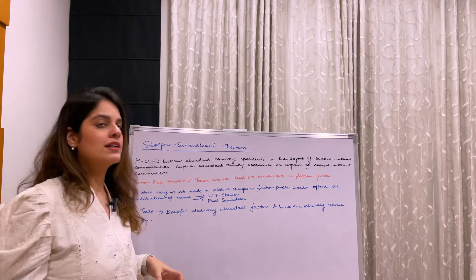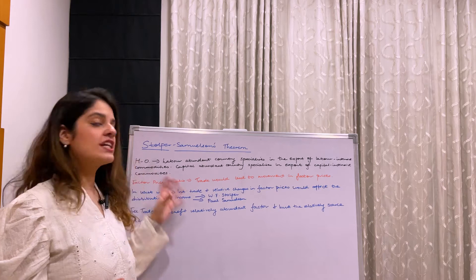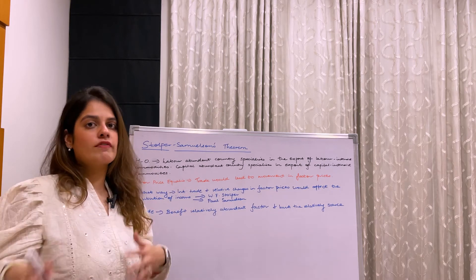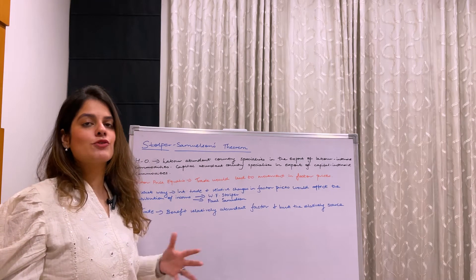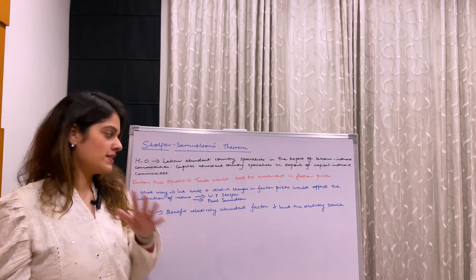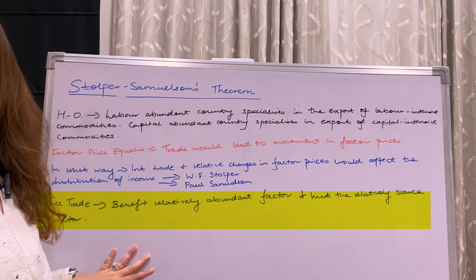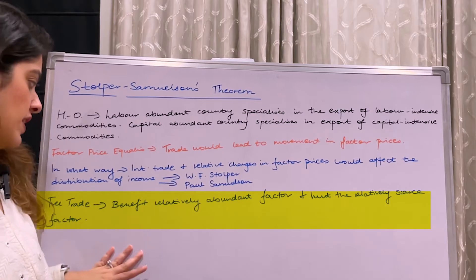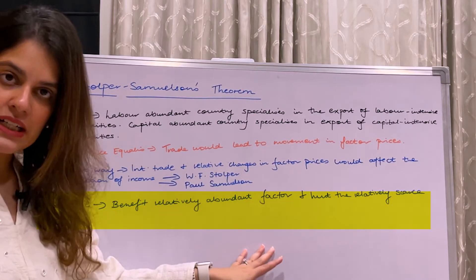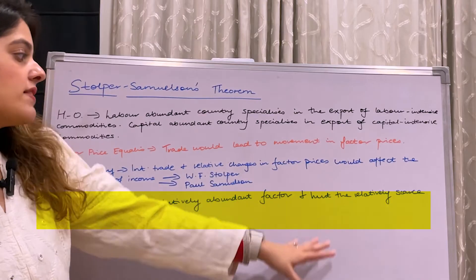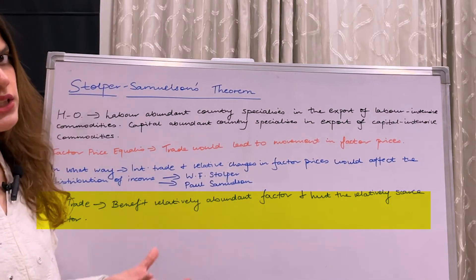The Stolper-Samuelson theorem was derived from these theories — especially HO theory — and you can call it a subsidiary of the HO theory. The crux is: if a country engages in free trade, the benefit would go to the relatively abundant factor, whereas it would hurt the relatively scarce factor in the country.